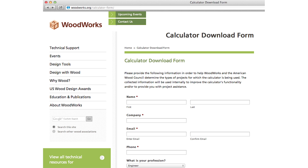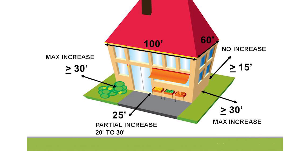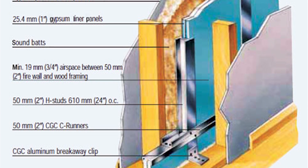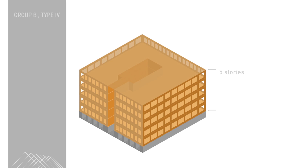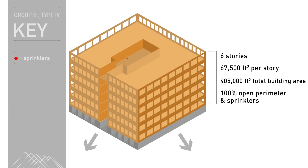Sprinklers allow you to go one story higher and also increase your square footage within the building. For Type 3, Type 4, and Type 5 construction, you can increase your square footage based on the amount of open area around the building — this is called a frontage modification increase. Another way to increase your area is by adding firewalls, because the code treats a firewall as creating two separate buildings, allowing a larger overall footprint. Combined with sprinklers and open frontage modifications, you can effectively triple your square footage.